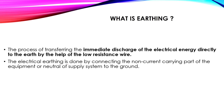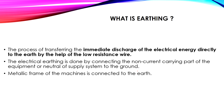Electrical earthing is done by connecting the non-current-carrying parts of equipment — such as the enclosure, which should not carry any charges — or the neutral of the supply system, to the ground, as we will see in the different earthing systems. The metallic frame or enclosure of machines is also connected to earth so that any static charges formed on the machine body are dissipated to the earth, protecting humans from shock.